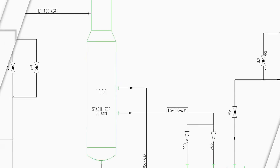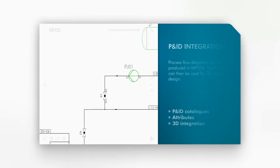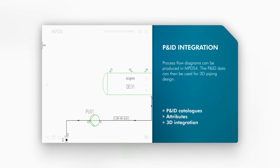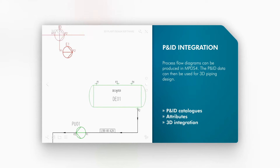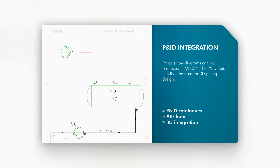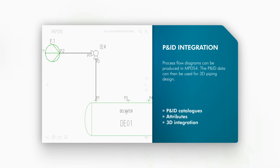Create process and instrumentation diagrams from component libraries available in MPDS-4. The 2D P&ID drawings can be accessed by 3D design to drive the creation of your 3D pipelines.